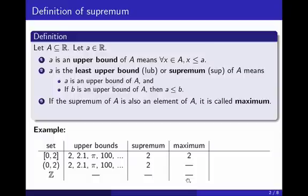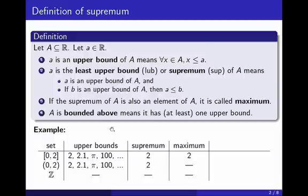And finally, to complete all the definitions, we say that a set is bounded above when it has at least one upper bound. And if it has at least one, it will necessarily have more than one. So going back to these three examples, the first two are bounded above, whereas the third one isn't.